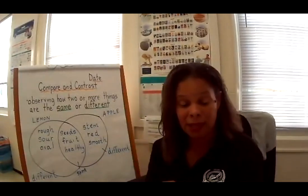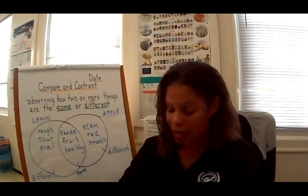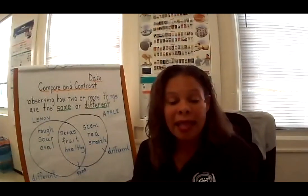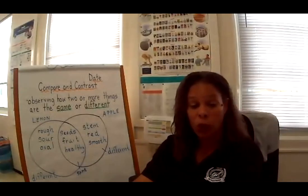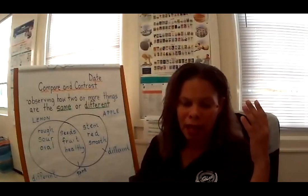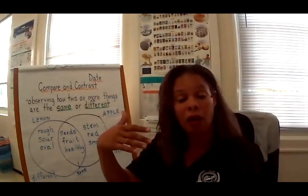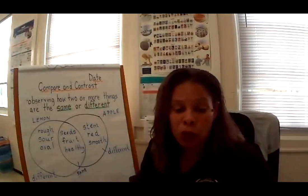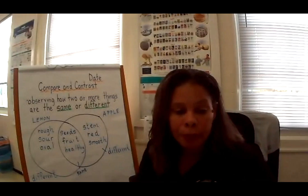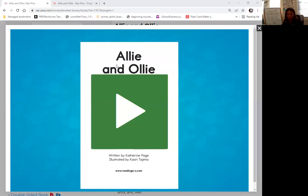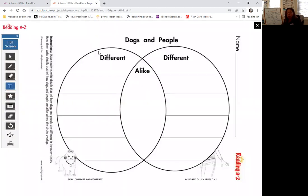Now it's time for you to practice. On Raz-Kids Plus, there is a story called 'Ali and Ali.' It talks about how two dogs are like people. Think about how dogs can be compared to people — how they're similar — and how they are different from people. Listen to the story on your own, and as you're listening, think about how these dogs are like people and how they contrast. When you finish, complete a Venn diagram showing how dogs and people are different and how they are alike.